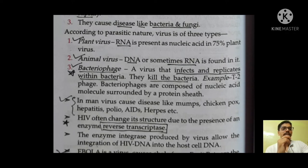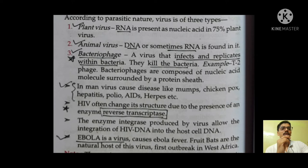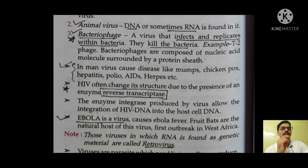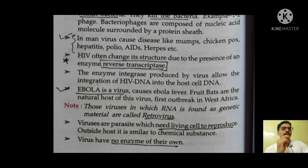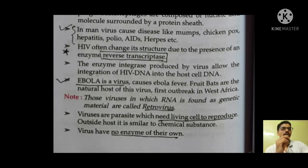According to parasitic nature, viruses are of three types: plant virus, animal virus, and bacteriophage. In plant viruses, RNA is present. In animal viruses, DNA or sometimes RNA is found. A virus that infects and replicates within bacteria is called a bacteriophage — it kills the bacteria and then replicates itself. In humans, viruses can cause diseases like mumps, chickenpox, hepatitis, polio, AIDS, herpes, corona, etc. HIV often changes its structure due to the presence of an enzyme called reverse transcriptase — a very important exam point.